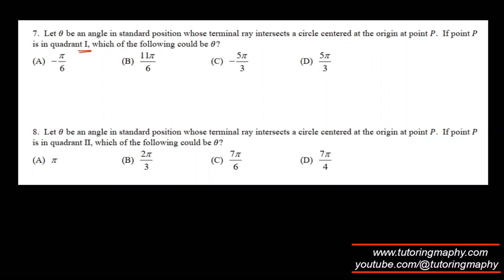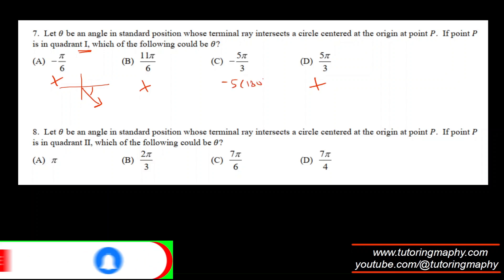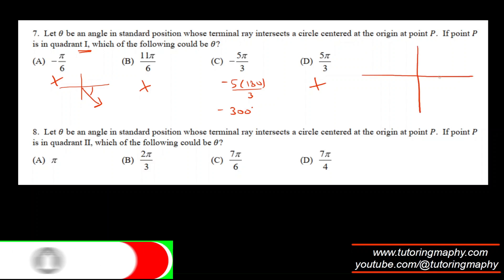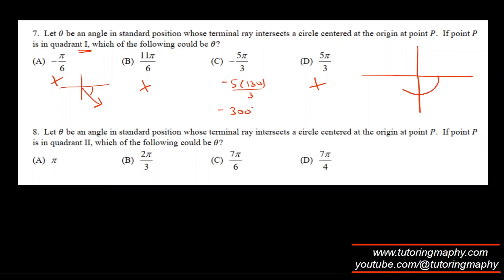Here we need to find a quadrant 1 angle. This one is a negative angle so it's not straightforwardly in quadrant 1 or 4. This is also in quadrant 4. This is about 330°, so that's in quadrant 4 too. But minus 5π/3 — replacing π with 180 gives minus 300°. A negative angle travels clockwise, and going clockwise 300° from the x-axis lands you in quadrant 1. So minus 5π/3 is the correct choice.